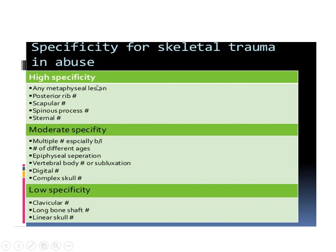Regarding specificity of skeletal trauma in abuse, we have high, moderate, and low specificity. High specificity injuries include any metaphyseal lesion, posterior rib, scapular lesion, and posterior bone. Moderate specificity includes multiple fractures, especially if bilateral, fractures of different ages, epiphyseal separation, vertebral body fracture or subluxation, and digital fracture or complex skull fracture. Low specificity injuries include clavicular, long bone, and linear skull fractures — these are also more common in accidental injuries and can be seen in both accidental and non-accidental trauma.